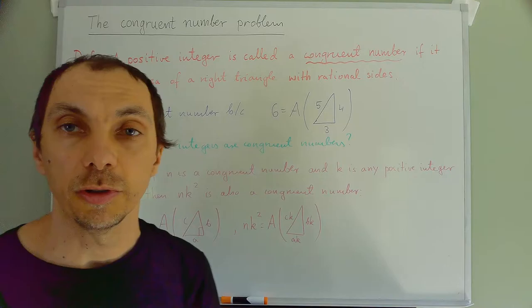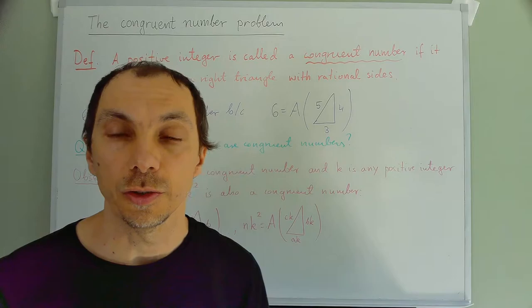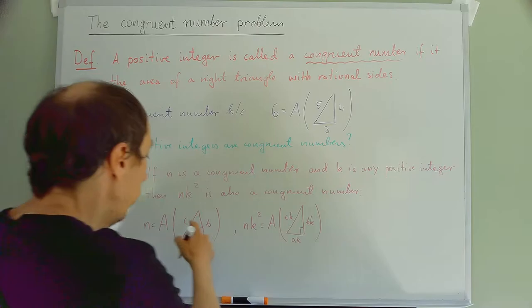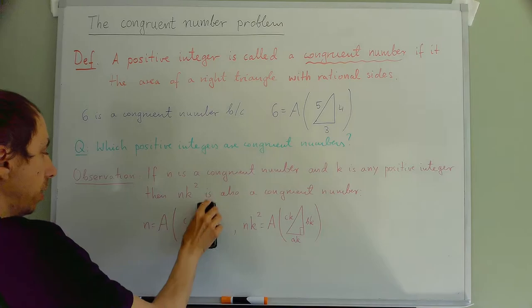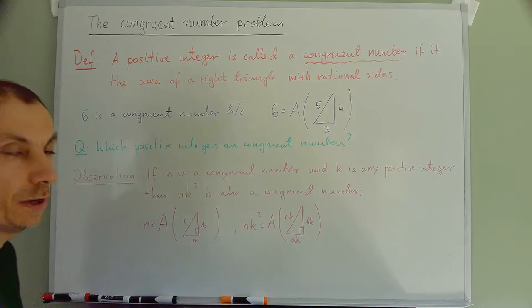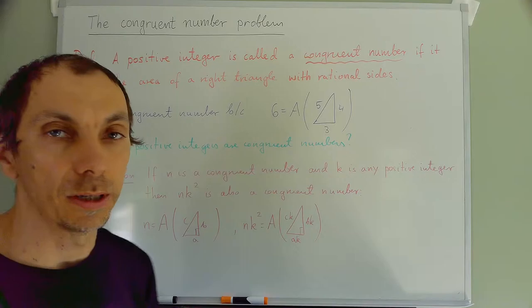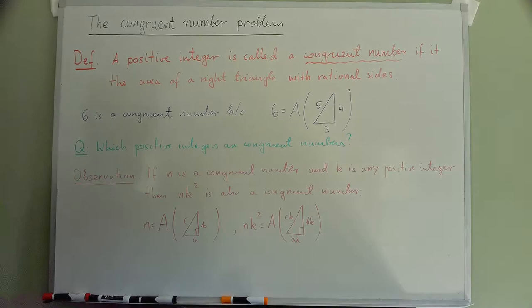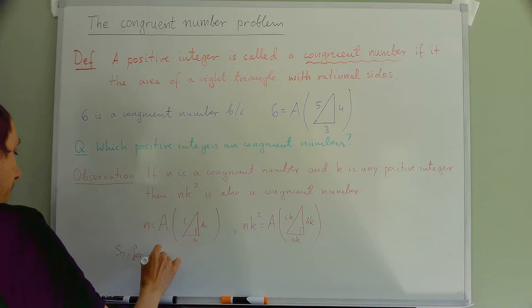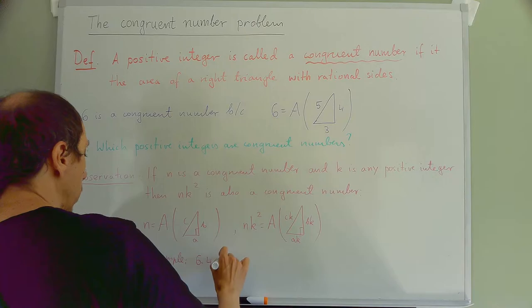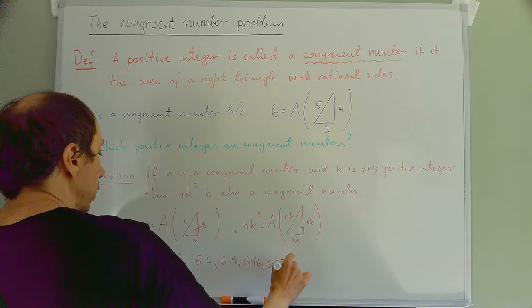It's still a right triangle because of the Pythagorean theorem. If a, b, and c are three rationals such that a² + b² = c², then clearly (ak)² + (bk)² = (ck)² as well. So, for example, 6 times 4, 6 times 9, 6 times 16, 6 times 25, and so on, are all congruent numbers.